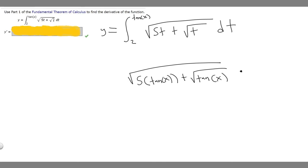Then multiply it by the derivative of the thing you plugged in. In this case, we plugged in tangent of x. The derivative of tangent of x is secant squared of x. So y prime is going to be equal to this.